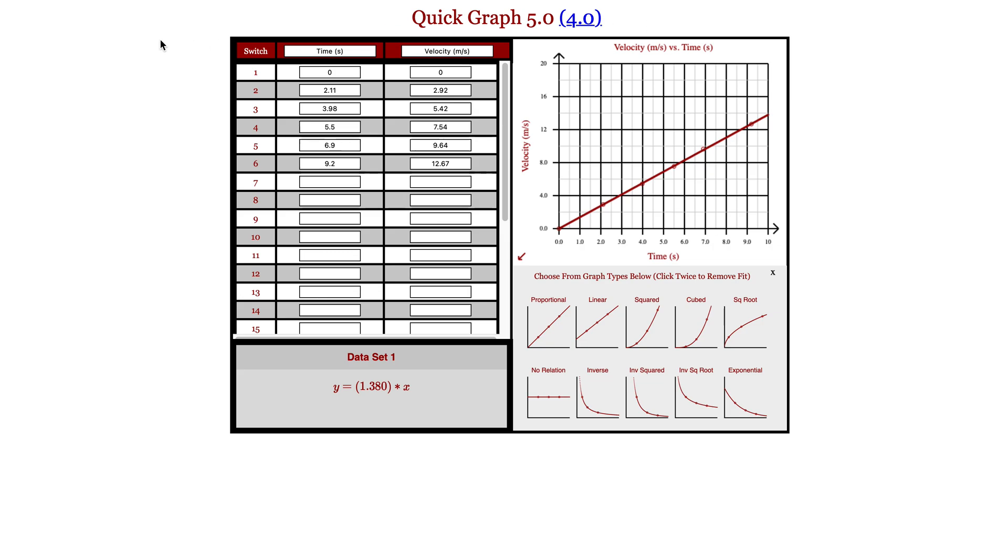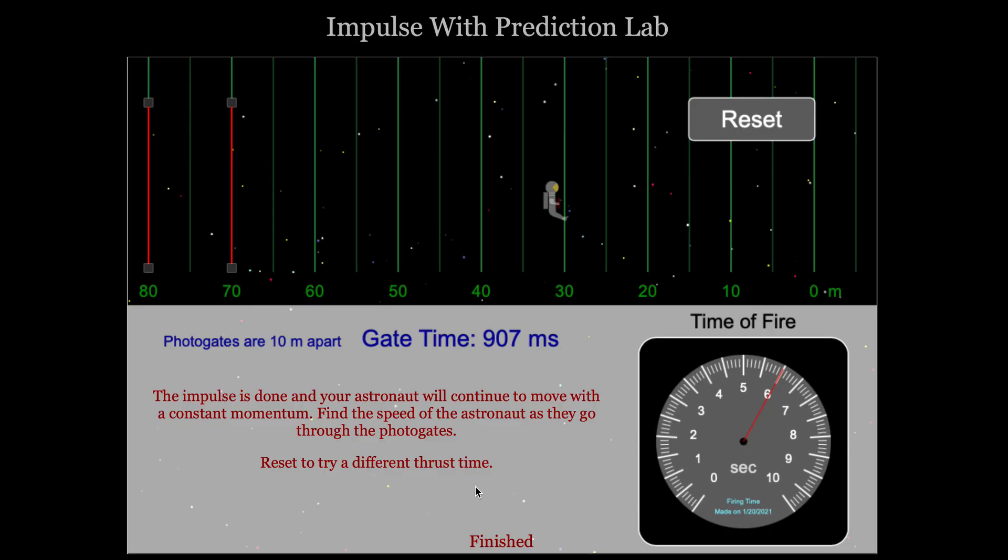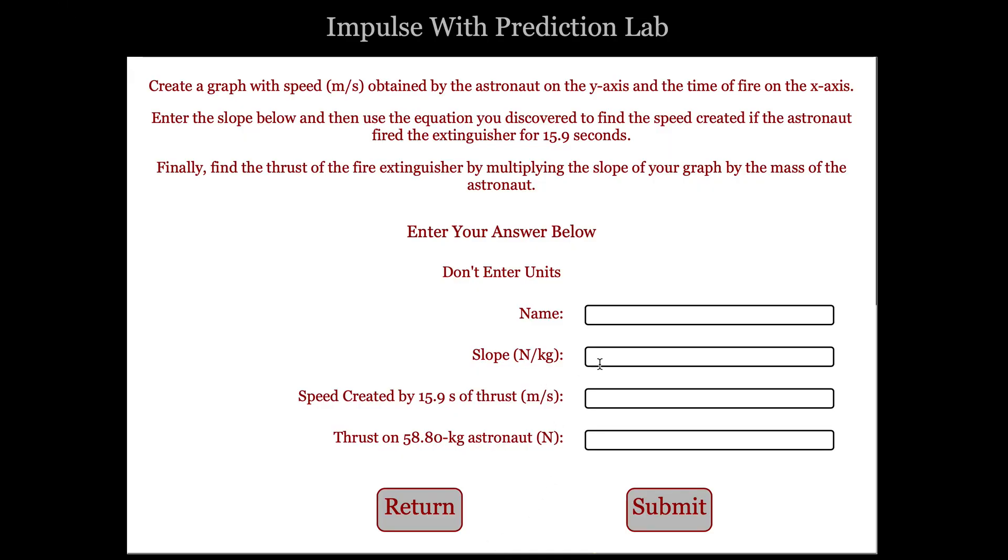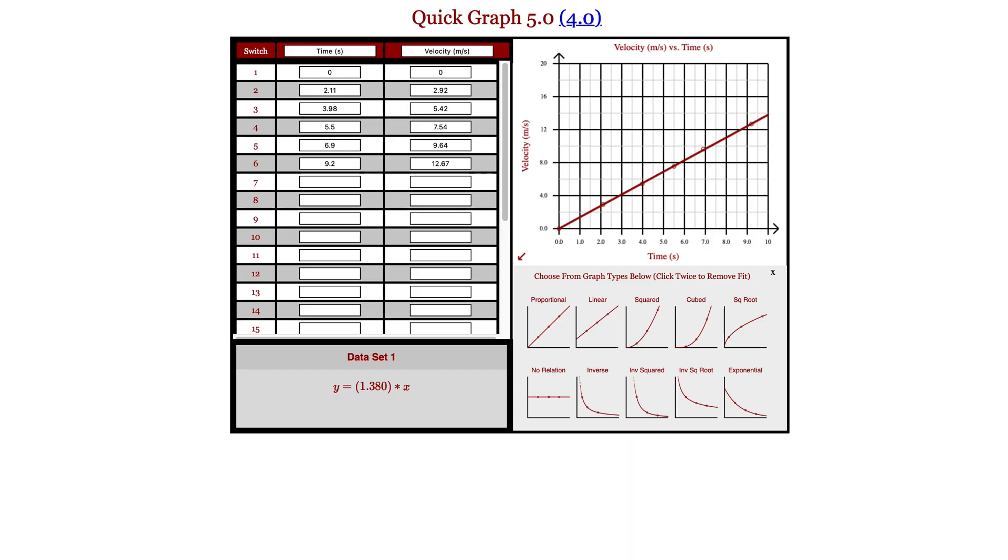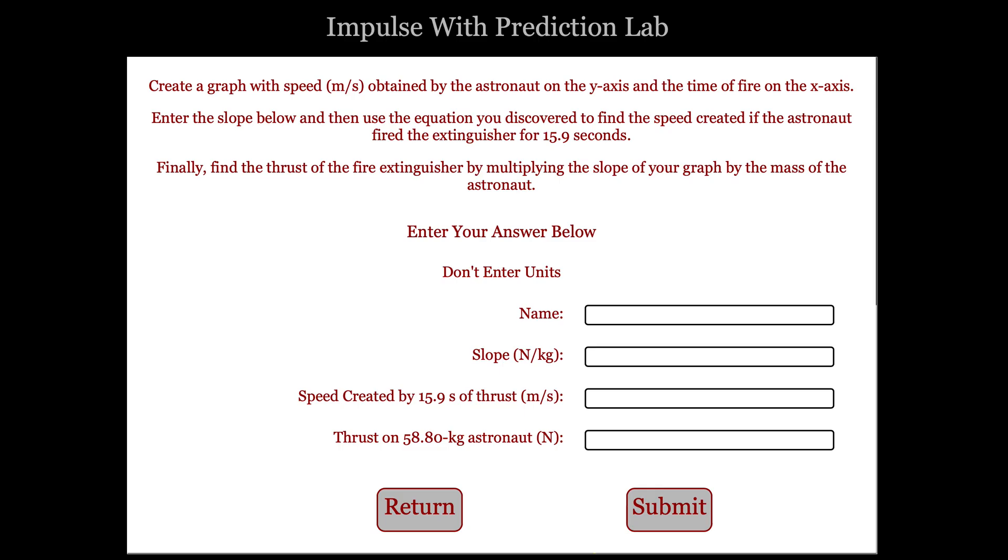When we go back to the program, students will be asked to type in their slope and make a prediction based on a time they weren't able to actually collect. They'd use their equation with the given time to figure out what the velocity would have been. Then they'll find the thrust of the fire extinguisher by using the slope times the mass of the astronaut. That should give them the thrust.